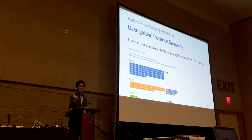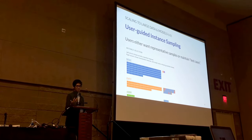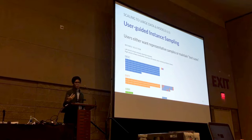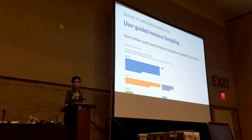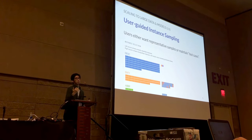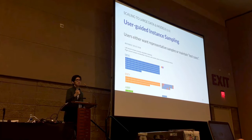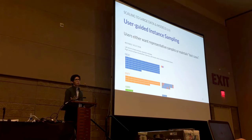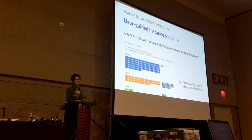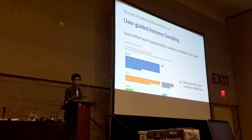The first scalability approach is user-guided instance sampling. Since there are many instances in the selection panel, we perform sampling to show a representative sample. At the same time, users who want to add specific instances — for example, those who maintain test cases and know that a sentence like 'what does FAST mean' should be classified as an abbreviation — can add those instances directly to examine model behavior on them.